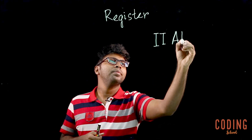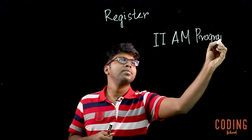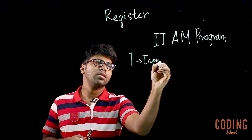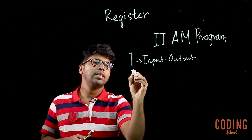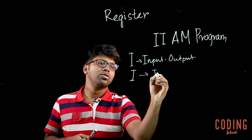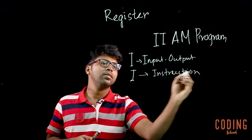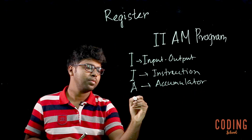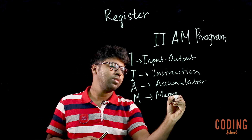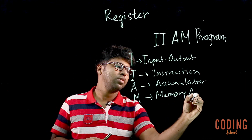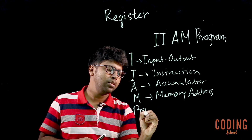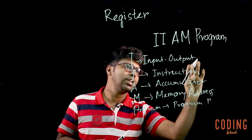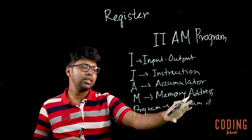I am program. So what does the program do? We have this input-output register. This is the program. This is the instruction. What do we do? We do this instruction. This is the accumulator. The registers are: the program register, the input-output register, the instruction register, the accumulator register, the memory address register, and the program register.